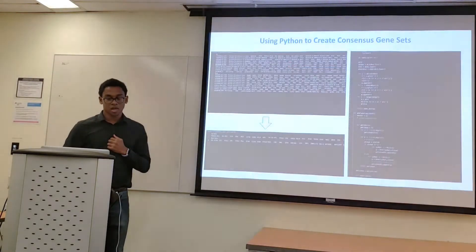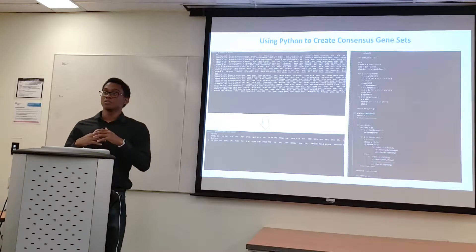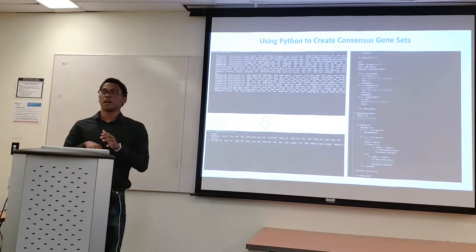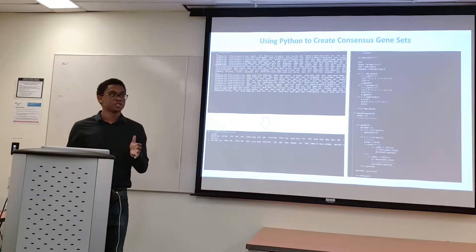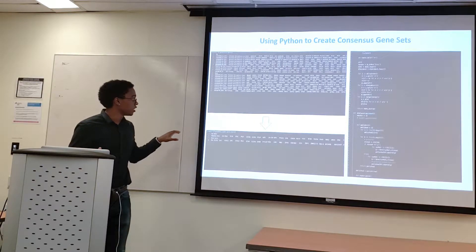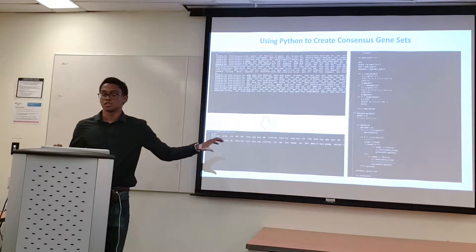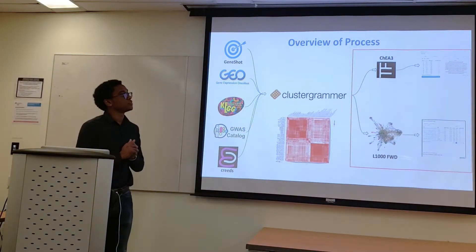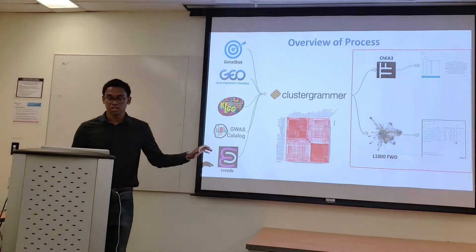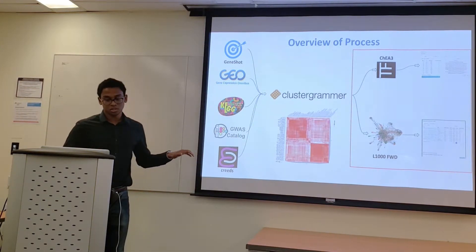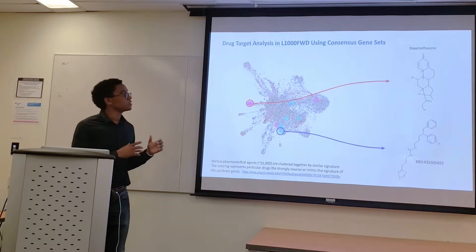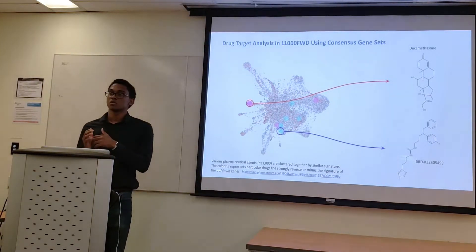Using this cluster, I compiled the gene sets into a separate GMT file and then ran them through a code I developed to find consensus genes between those gene files. We ran three consensus genes and compiled a singular gene set of those consensus genes. With those consensus genes, I then ran them through CHIA3 and L1000FWD. We'll begin with the analysis of L1000FWD. I ran the up and down genes from that consensus into the database, and it returned either mimicking drugs or reversing drugs.